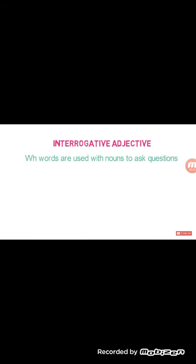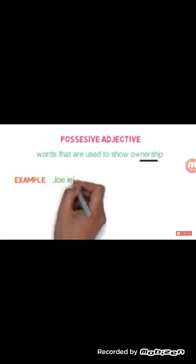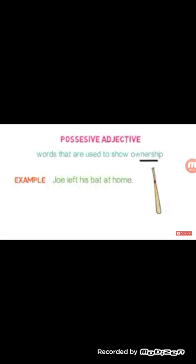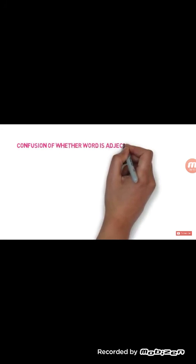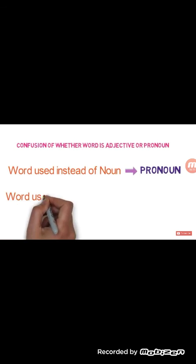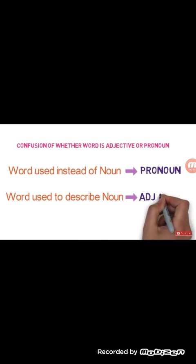Now let's move on to the next topic — possessive adjectives. Words that are used to show ownership are called possessive adjectives. For example: 'Jo left his bed at home.' Here 'his' is the possessive adjective. Remember this formula: if the word is used instead of a noun, it is a pronoun; if it is used for describing a noun, then it is an adjective.